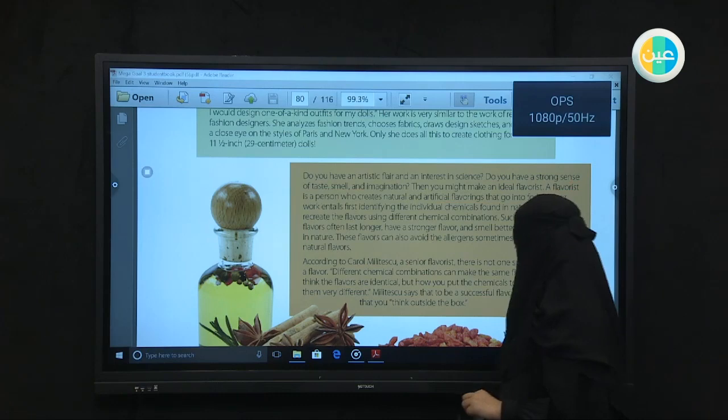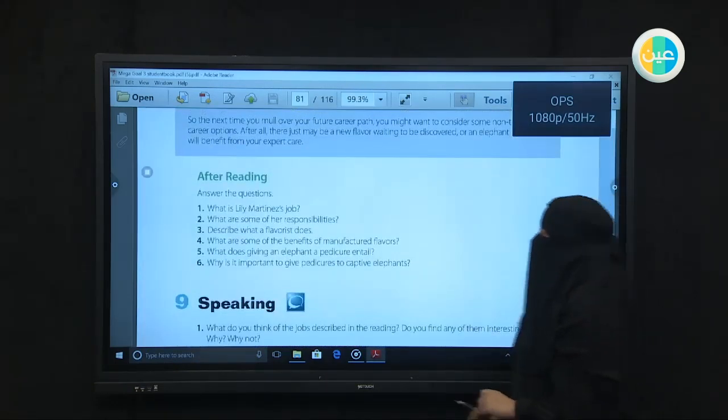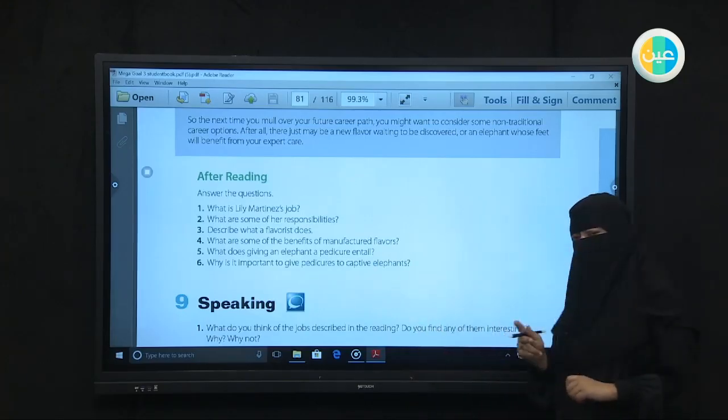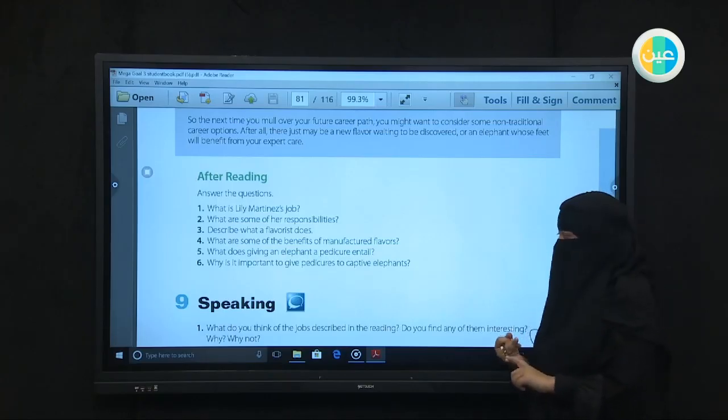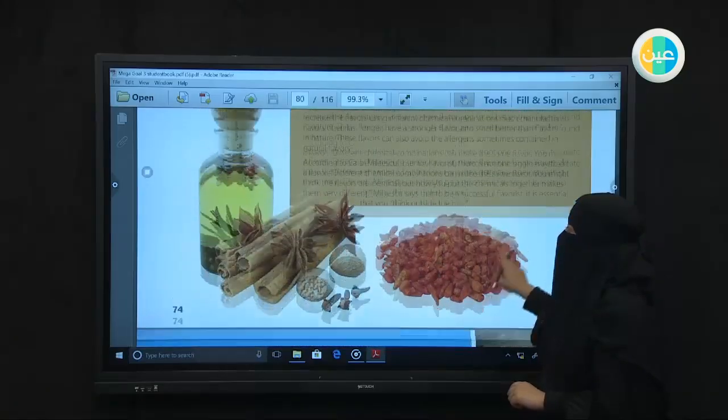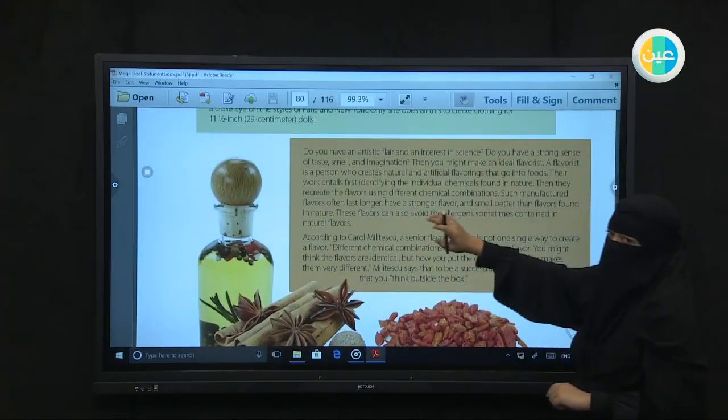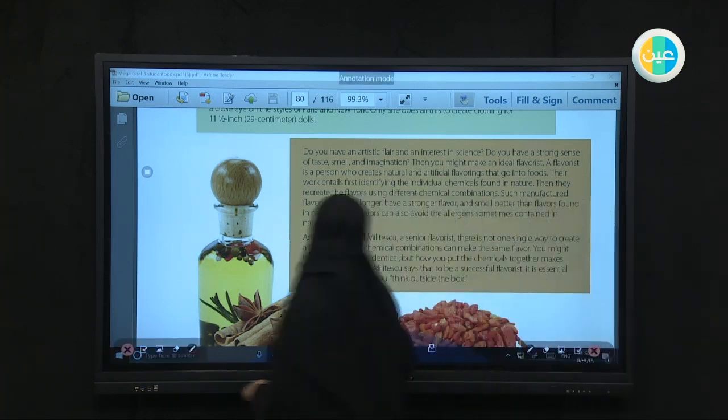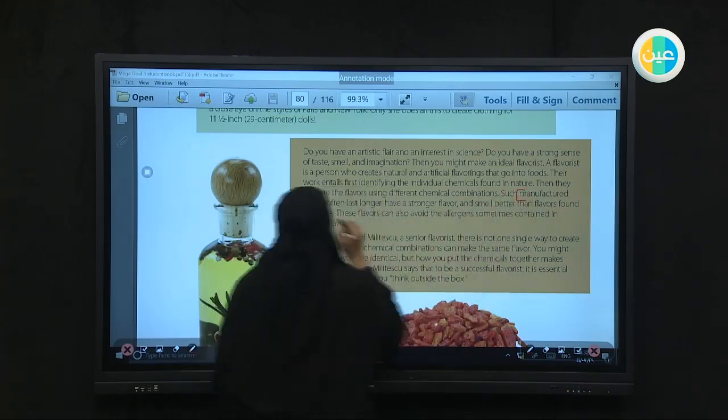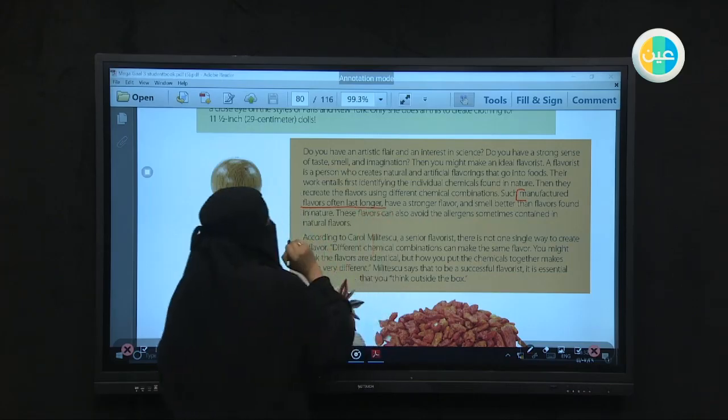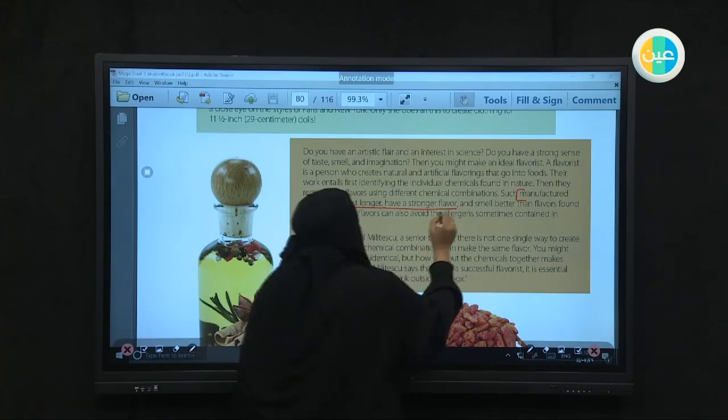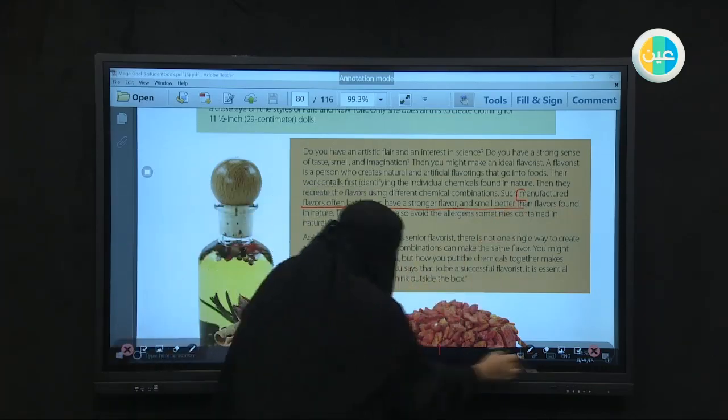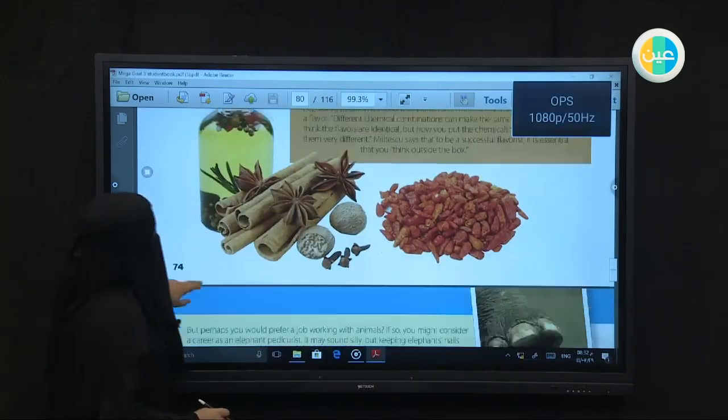Let's check number four. Let's find another question about flavors. What are some of the benefits of manufactured flavors? Now we talked about two different kinds of flavors - natural and manufactured. What's the advantage of artificial flavors? Let's see. We're looking for the word manufactured. There it is, right here. The word manufactured will be here. And let's see what the advantage of these artificial things is. Such manufactured flavors often last longer - they last for a longer period. They have a strong flavor and smell better than the flavors found in nature - than natural flavors. This is your answer to the fourth question.